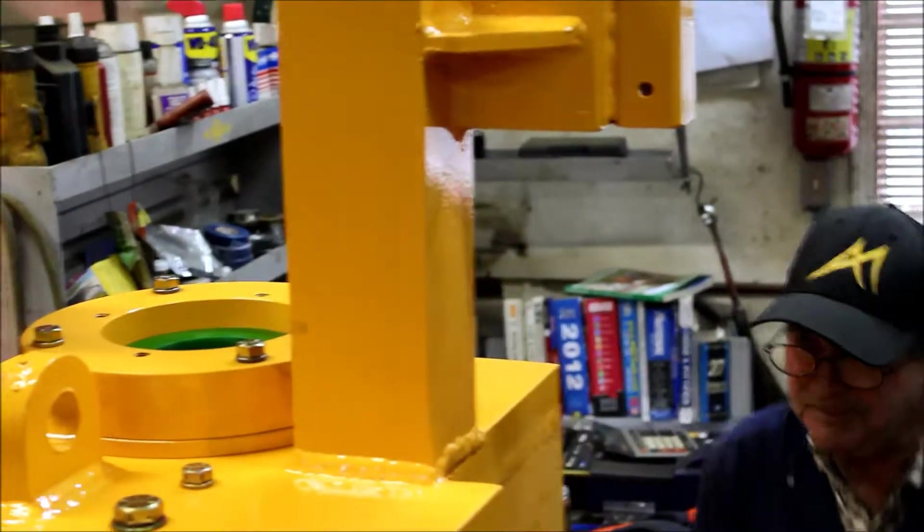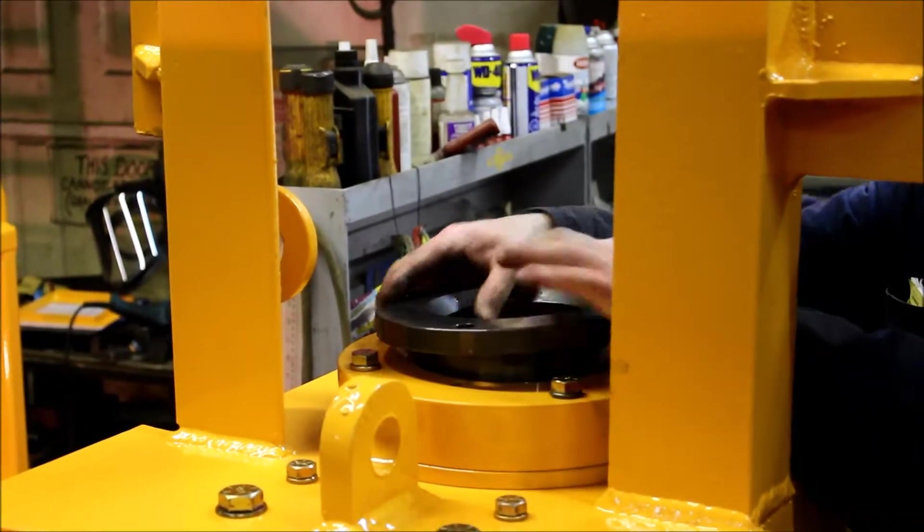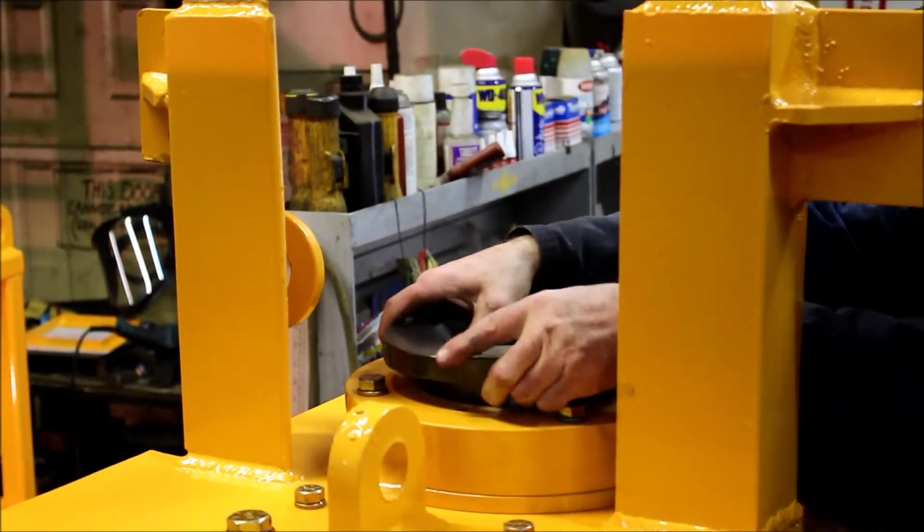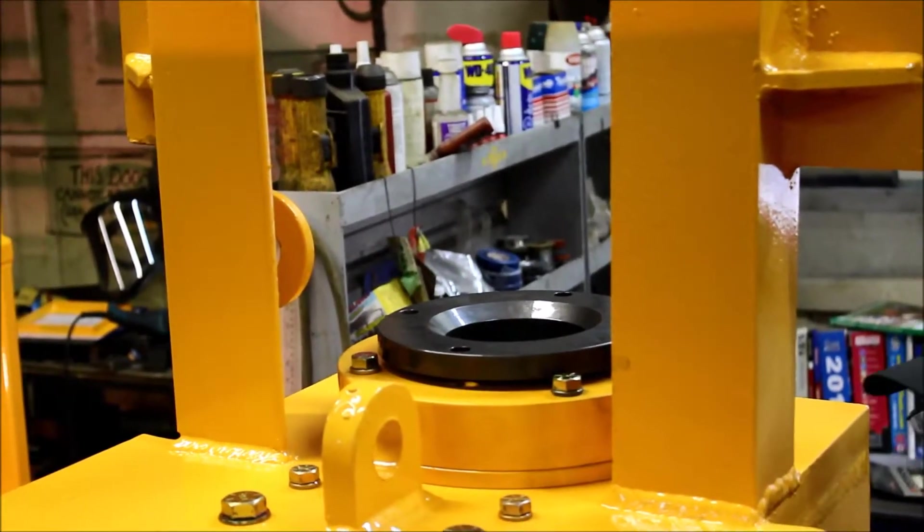Now the top wear ring goes in. This one is a 4½ inch top wear ring. Just drops right in there. Line the holes up.